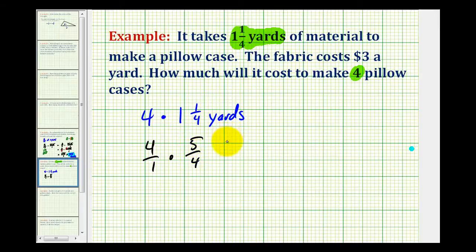We're going to leave the units off right now. Notice how this simplifies nicely. Now we can multiply: one times five is five, our denominator is one, which means to make four pillowcases it's going to take a total of five yards of fabric.